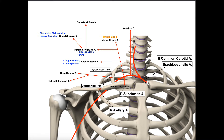The brachiocephalic artery goes toward the right side of the body and it bifurcates into a right common carotid artery and a right subclavian artery. The arch of the aorta also gives off two other branches directly: the left common carotid and the left subclavian. So with the arch of the aorta, the left common carotid and subclavian arteries come directly off of the arch, whereas on the right side they come off the brachiocephalic artery after it bifurcates.